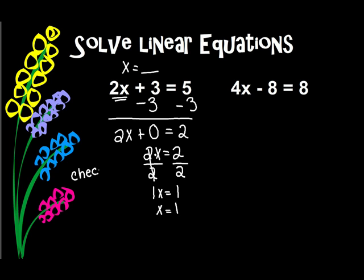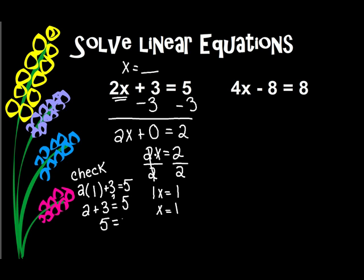Now let's check that, just to make sure that we're right. I'm going to have 2 times x, plus 3, and that should equal 5 if I'm correct. Well, x is 1, so I'm going to put a 1 in there. 2 times 1 is 2, plus 3 should equal 5 if we're right. Well, 2 plus 3 is 5, and 5 equals 5, so I know that this is my solution.